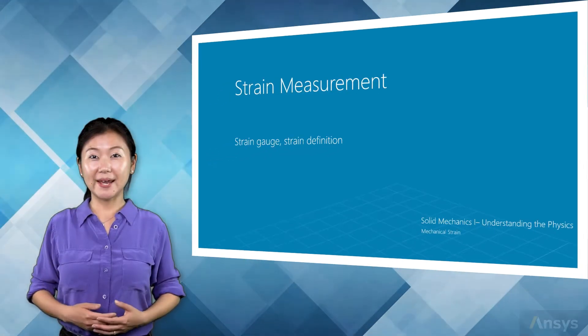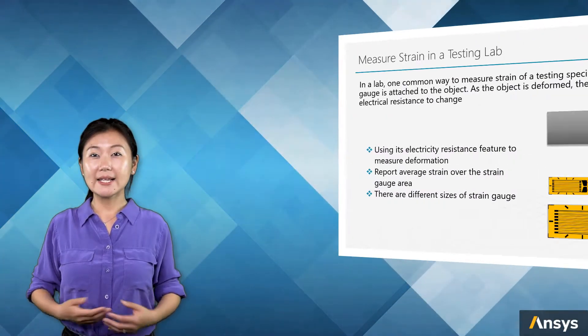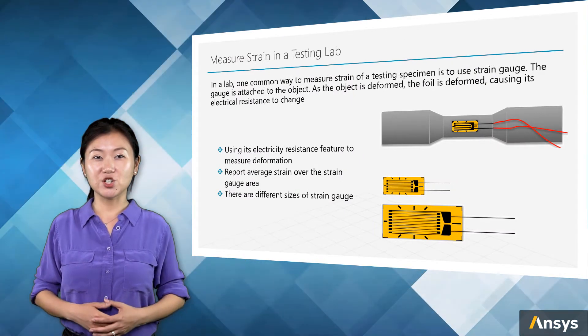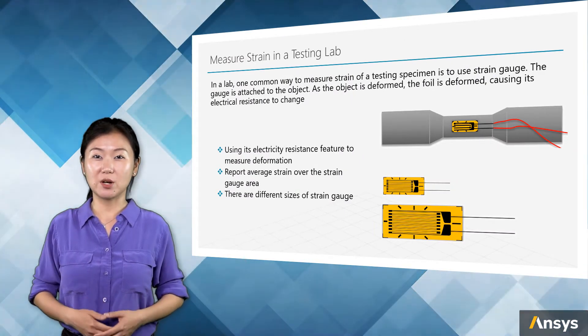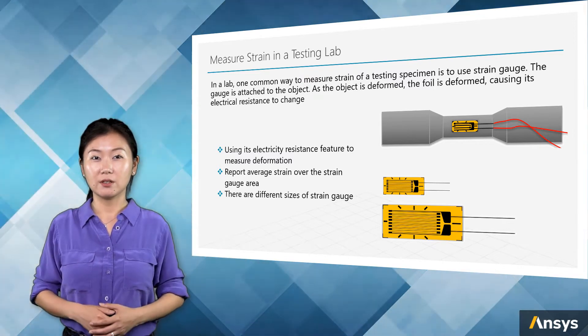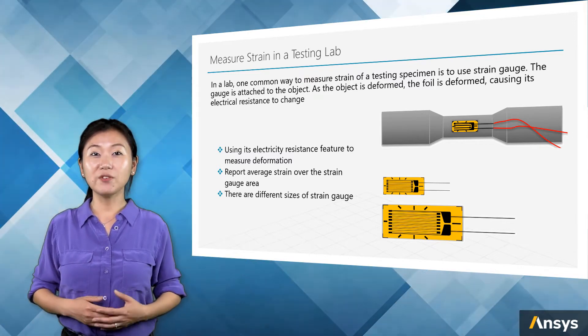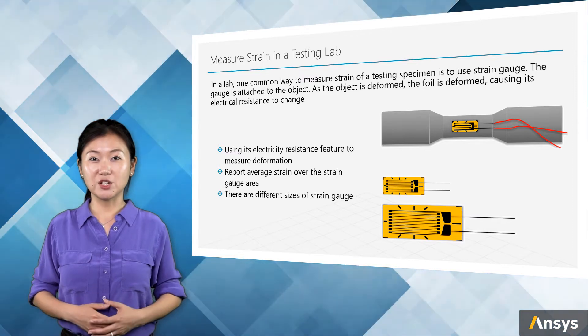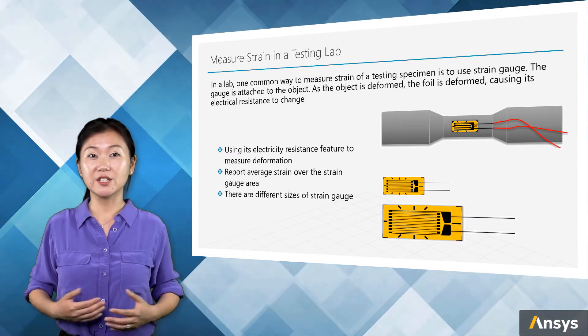Before going into strain in mechanical analysis and simulation, let's first have a look at how strain is measured in a testing lab for a real experiment. This will help us understand the nature of strain. Besides, engineers are often given lab data for material deformation and for evaluating material status.